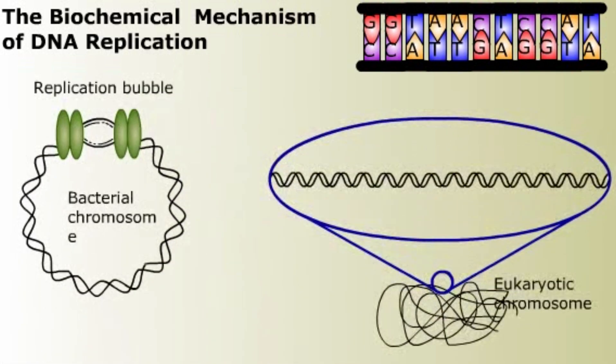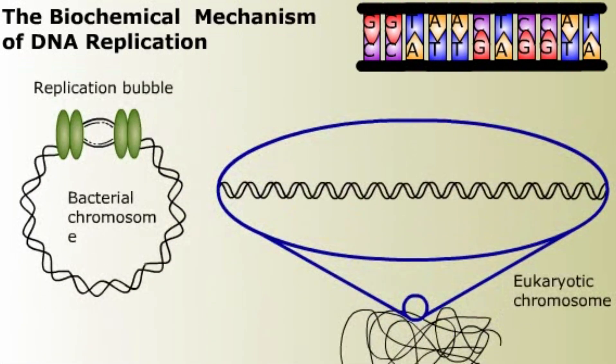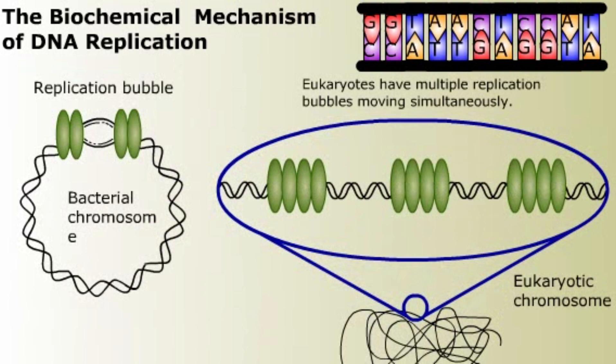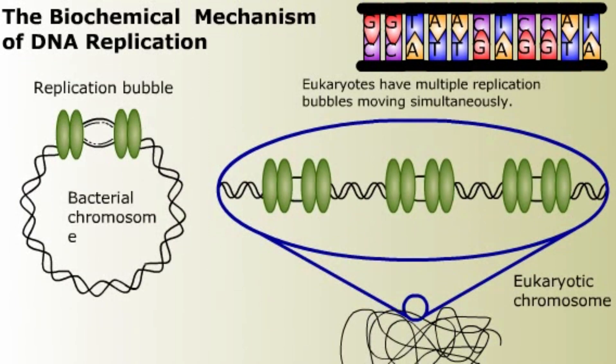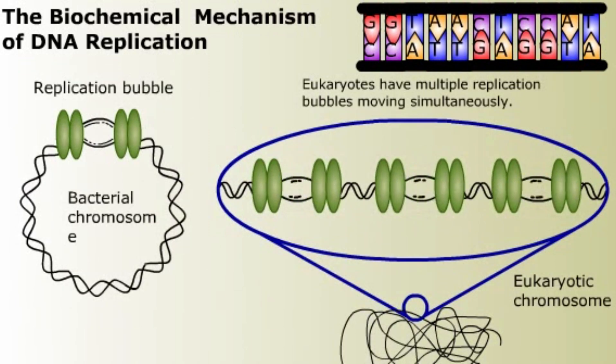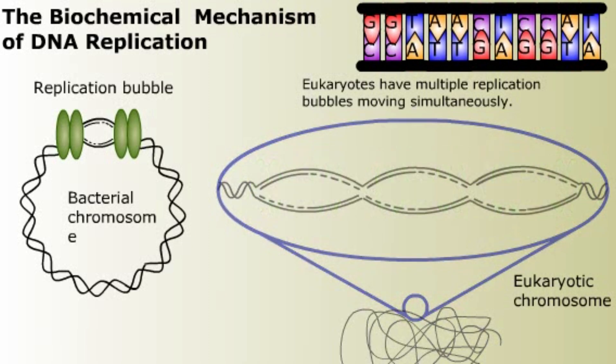Replication occurs in both directions. Since eukaryotes have multiple origins of replication, they have multiple replication bubbles moving simultaneously. The bubbles eventually collide.